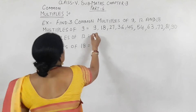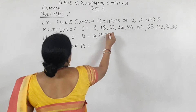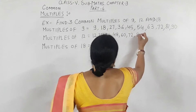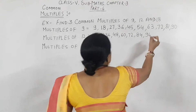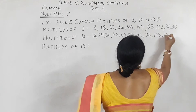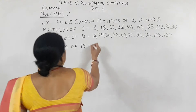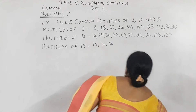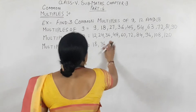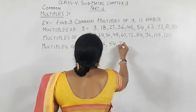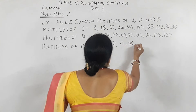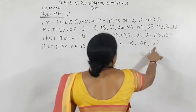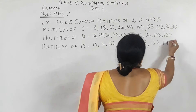Now, multiples of 12: 12, 24, 36, 48, 60, 72, 84, 96, 108, 120. Now, multiples of 18: 18, 36, 54, 72, 90, 108, 126, 144, and so on. We can write down so many multiples.